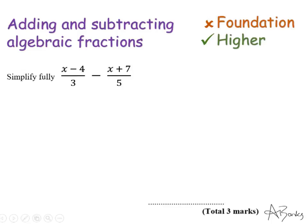Here I have 3 and 5 on the denominators. My lowest common multiple is going to be 15. So putting a 15 on the bottom. Now the first fraction, to go from the 3 on the denominators to the 15, I am multiplying by 5.